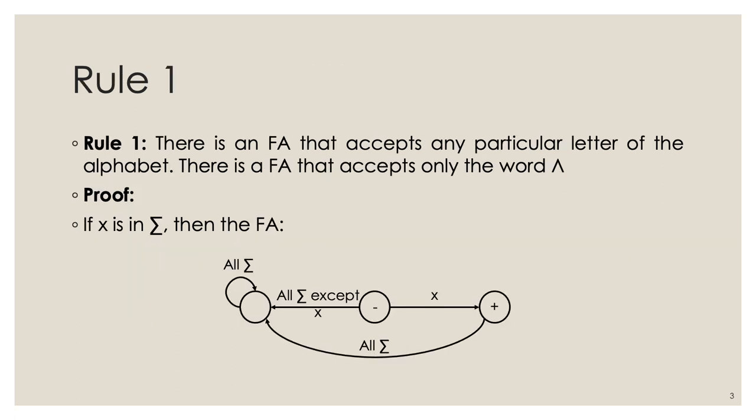With rule number 1, there is an FA that accepts any particular letter of the alphabet, and there is an FA that accepts the empty string. To prove this: if X is part of the alphabet, the corresponding finite automata transitions from the initial state to the final state upon consuming X. Anything else from the initial state leads to the sink state. From the final state, any letter leads to the sink state, and from the sink state we loop on any letter.